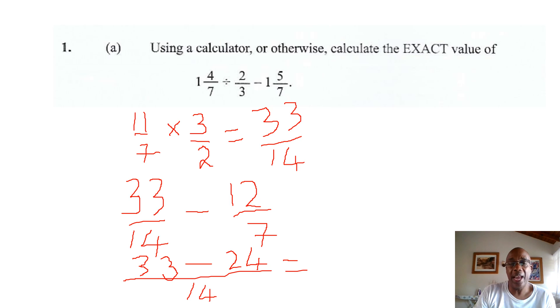And we simply subtract 33 minus 24. And you are going to get 9 as the numerator. Over 14 as the denominator.